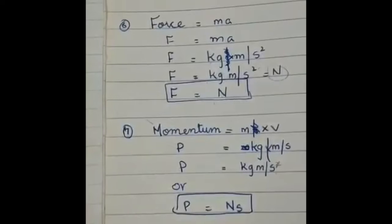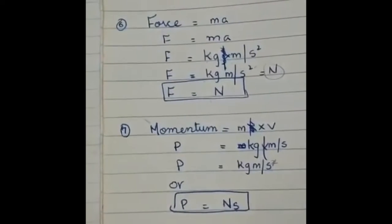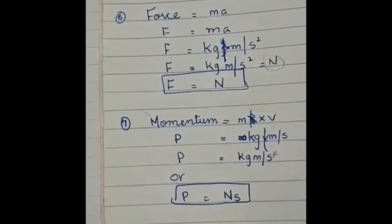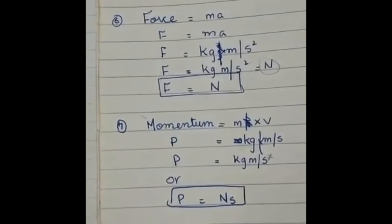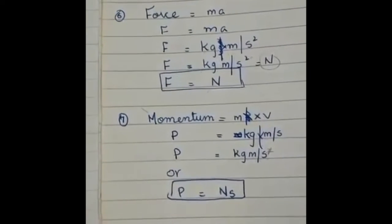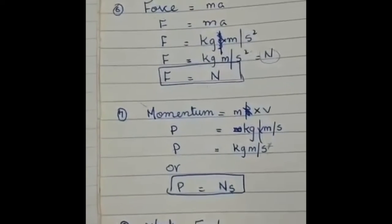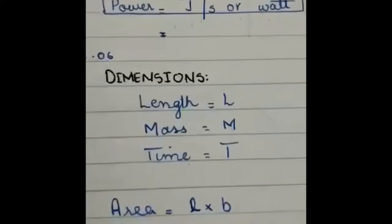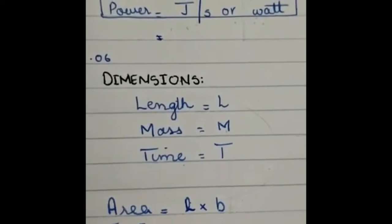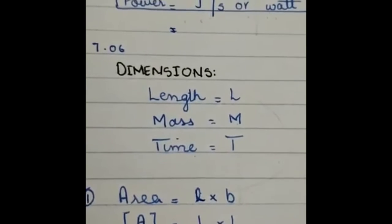Momentum which is mass into velocity, that is kilogram meter per second or Newton second. Work, that is force into displacement, equals to Newton meter or simply joules. And the last one is power, that is work done per unit time, that is joules per second or watt.